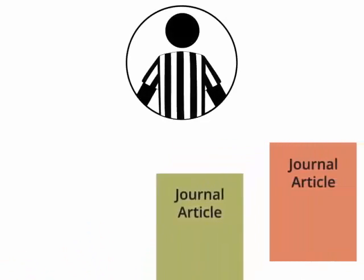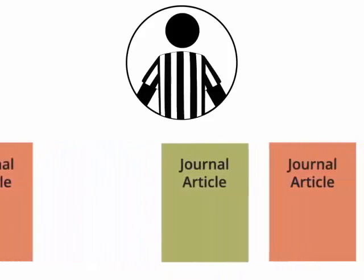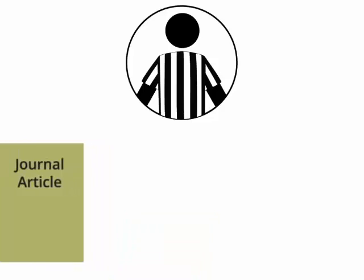When it comes to journal articles, this process is called peer review. Peer reviewed articles are considered high quality because the review process helps to filter out sources that are written by unqualified or biased authors.